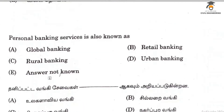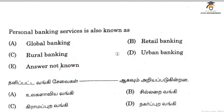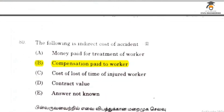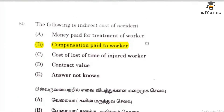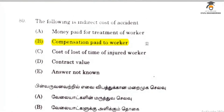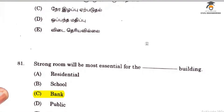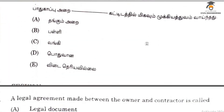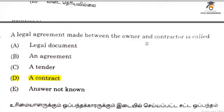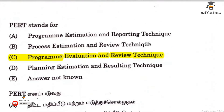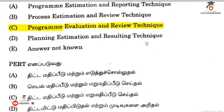Option 79 is retail banking — personal banking services fall under retail banking. The following is an indirect cost of accident: compensation paid to worker. A legal agreement between owner and contractor is called a contract.